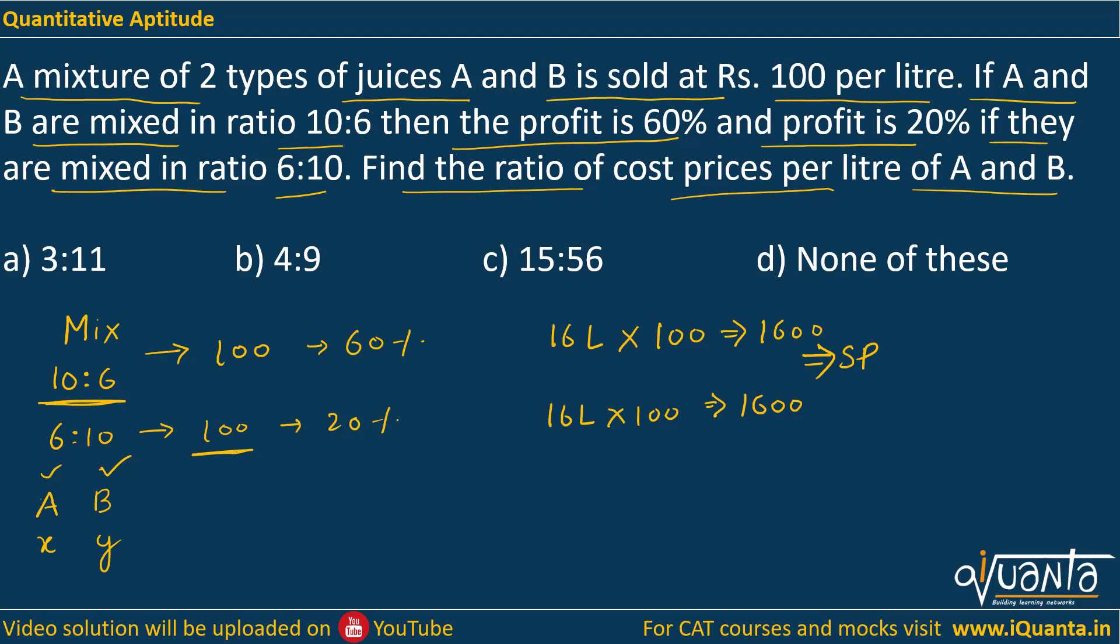So in the first case the CP will be 10x plus 6y, because we have 10 litres of juice A and 6 litres of juice B. In the second case we'll have CP equal to 6x plus 10y, because we have 6 litres of juice A and 10 litres of juice B. I hope this is clear.